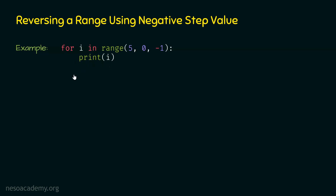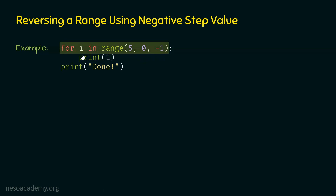Inside the for loop we have the print function, passing i to it. After this for loop, we just want to print 'done' on the screen. Let's execute this code line by line. The first line is for i in range. Variable i will receive value 5 first, so let's make variable i point to value 5. Then we print this value — 5 is now printed on the screen.